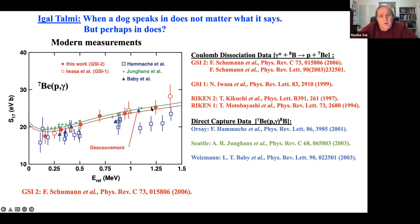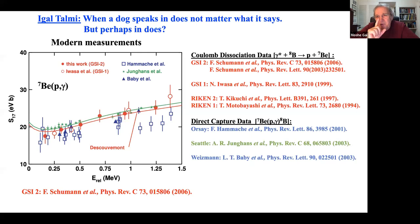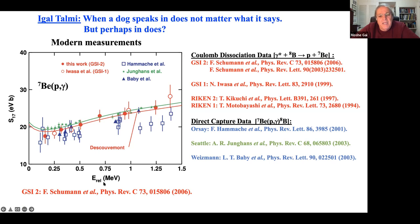Our GSI results (GSI 1 and GSI 2, from a facility in Germany) were published four years before Seattle and Weizmann, so no one could say we knew what to look for. The gold-plated results agreed with us - not we with them. People who said in 1992 the method would never work - 14 years later, in 2006, this is closed. The Primakov process is now used by many people.